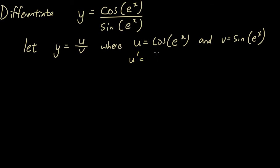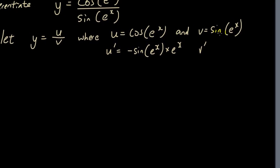So u equals — well, we're going to have to use the chain rule. So cosine differentiates into negative sine e to the x, and then we differentiate the inside, multiplied by the derivative of the inside which is e to the x. And v' equals — sine differentiates into cosine, copy down the inside, times e to the x differentiates into e to the x. So derivative of the outside times by the derivative of the inside.